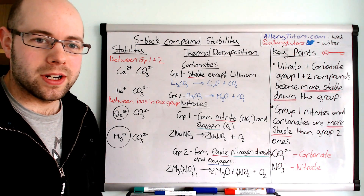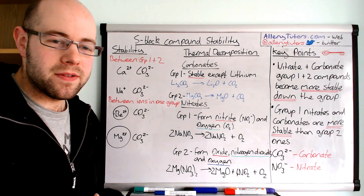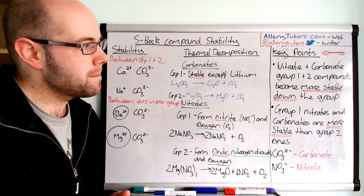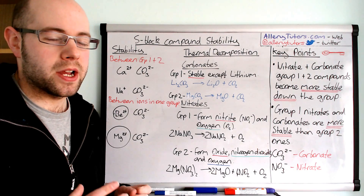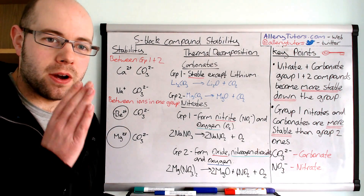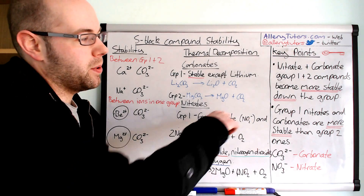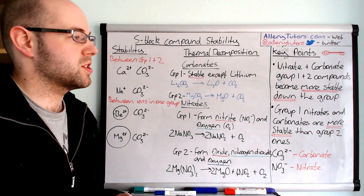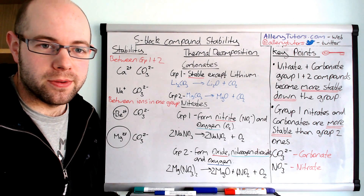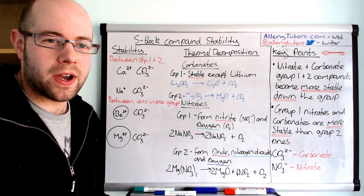We're going to start by looking at the key points that will underlie everything we do in this video — they're on the right. You can see that nitrate and carbonate group 1 and 2 compounds become more stable as we go down the group. The second point is that group 1 nitrates and carbonates are more stable than group 2 ones, and we're going to go through the explanation to find out why.